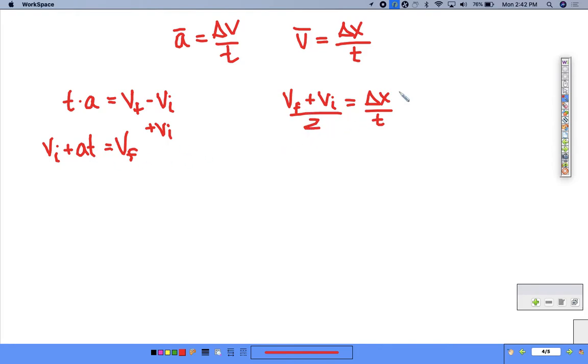And then over here, I want to multiply the two across and subtract the vi off. So I'm going to have vf equals 2 delta x over t minus vi.